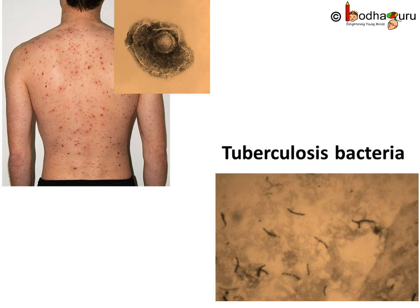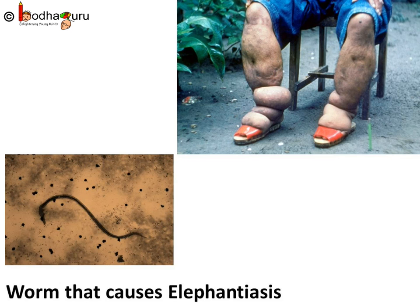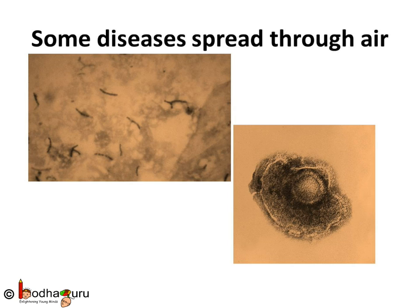So in nutshell, infectious diseases are caused by microbes which may get spread. That infectious agent which causes the disease can be a virus like in the case of chicken pox, or bacteria like in the case of tuberculosis, or a multicellular organism such as a worm in case of elephantiasis. Sometimes these microbes spread in air even when patients cough or sneeze, and thus the disease gets transferred to other people.